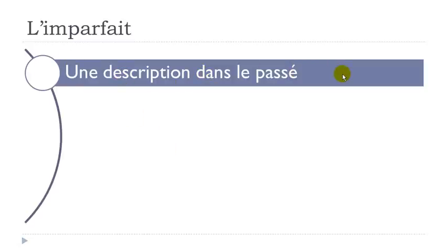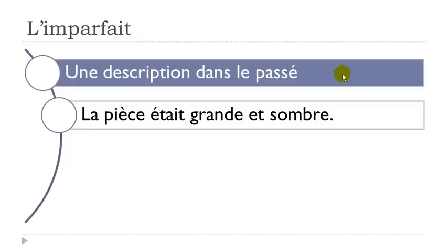For example: 'la pièce' — the room — 'était' — that's the verb 'to be' in imparfait form — 'grande et sombre': big and dark. So in that case, when you want to describe the room, you should use l'imparfait.